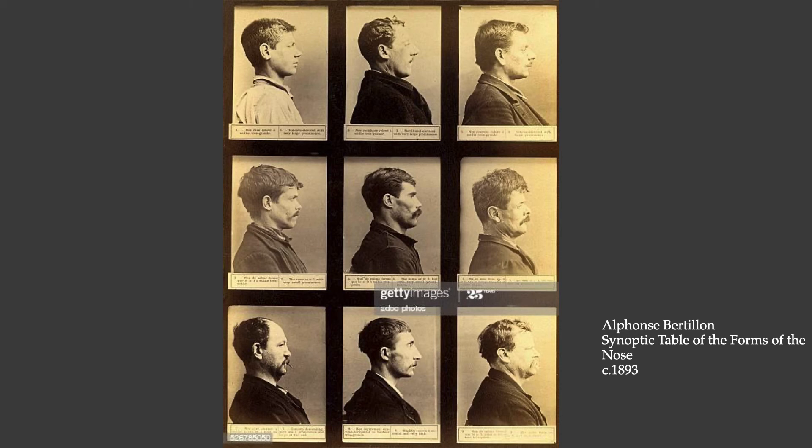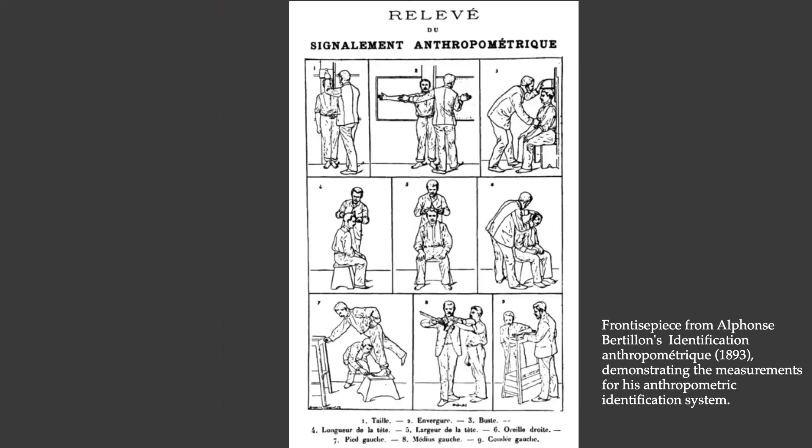Here is a whole collection of photographs Bertillon captured — used as a synoptic table of the forms of the nose. These are profile photographs of different nose types; they're photographs of specific individuals, but he's using them as diagrams of nose types. This illustration shows how some of those measurements would have been taken to get a comprehensive reference document of the individual. You can see how the photograph provides much more precise data than specific measurements alone would be able to.